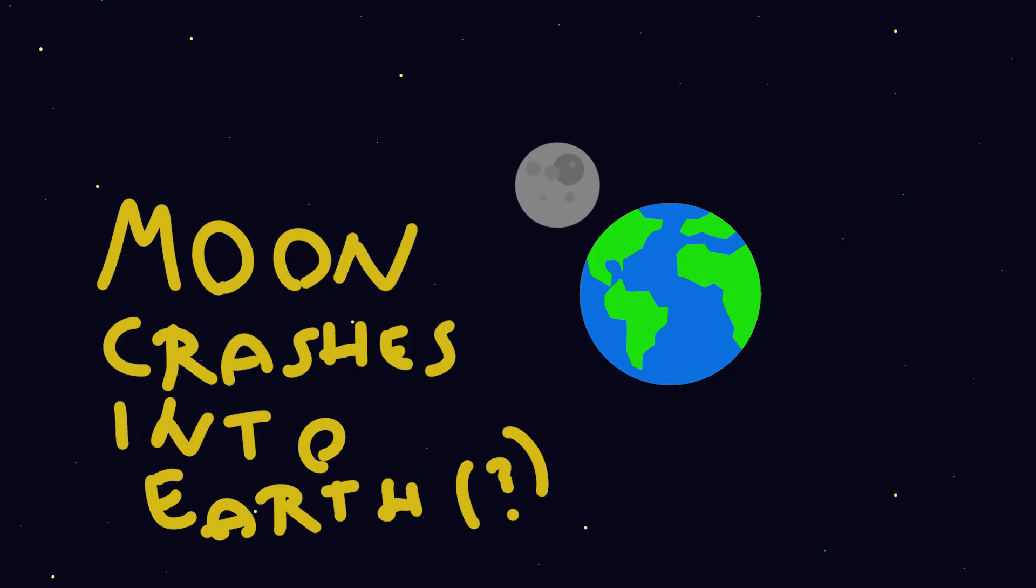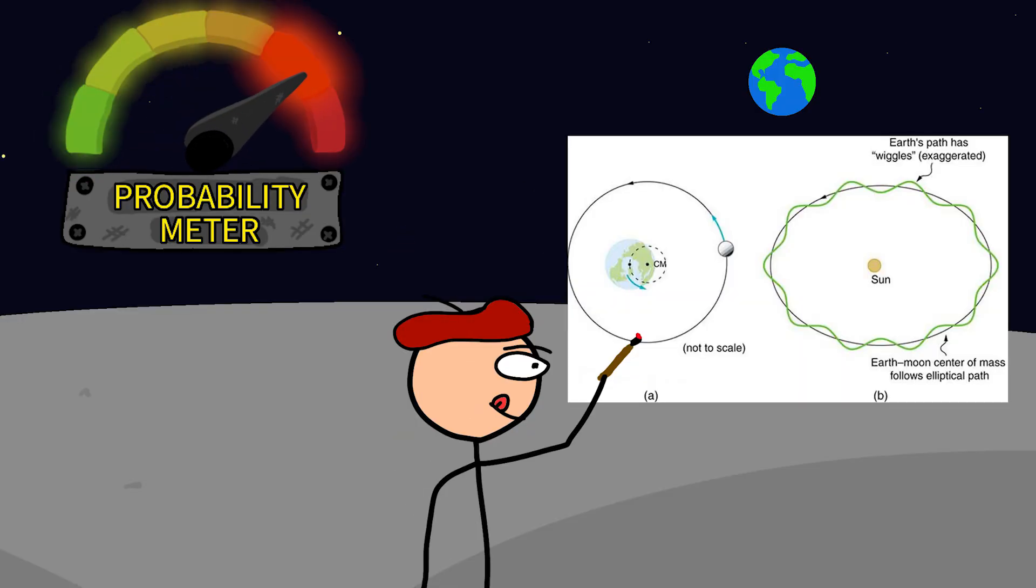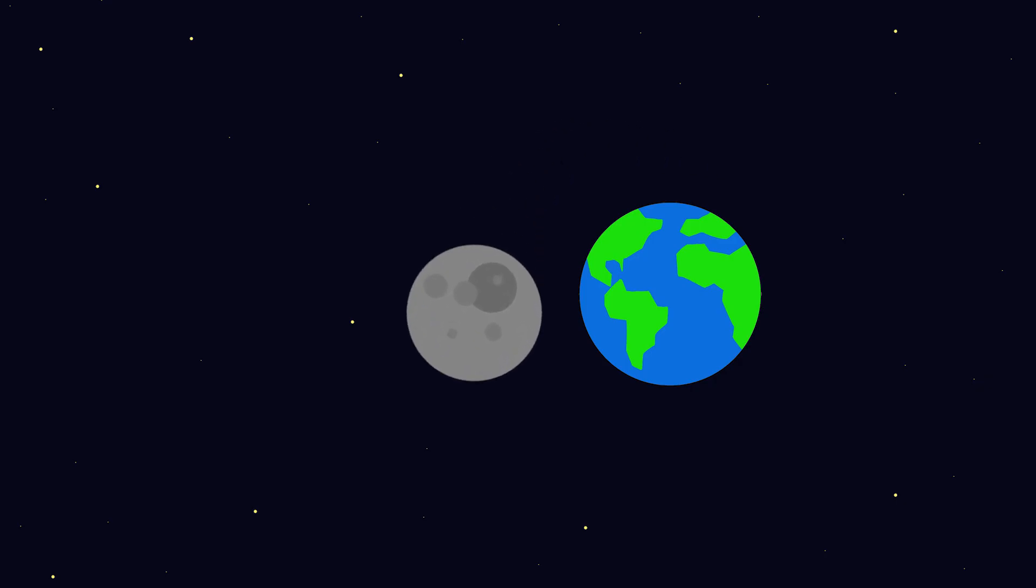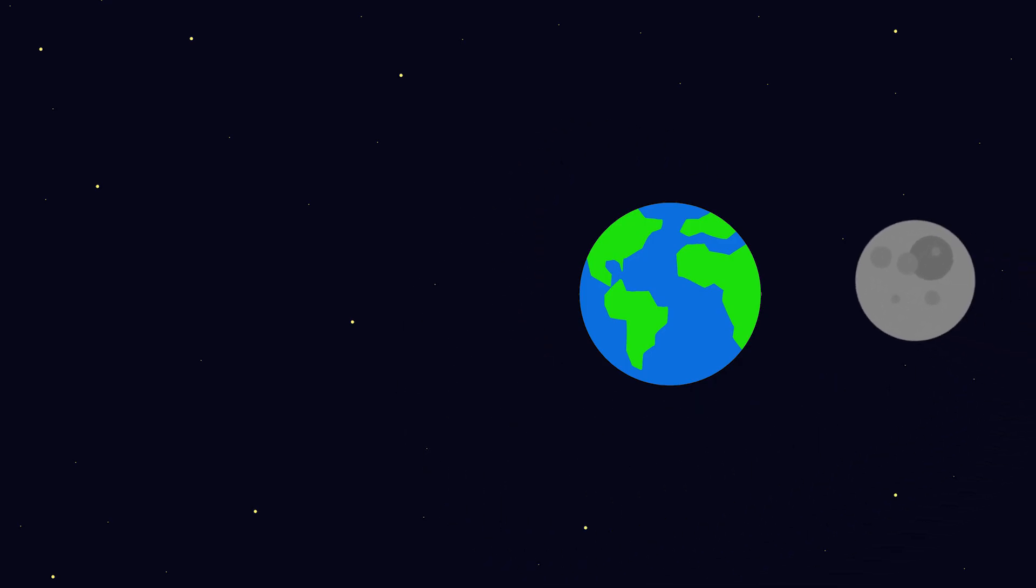Moon crashes into Earth. It sounds impossible, but the laws of physics say it can happen. If the moon's orbit ever became unstable, its own momentum could eventually drag it back down toward us. At first, only small changes would appear.